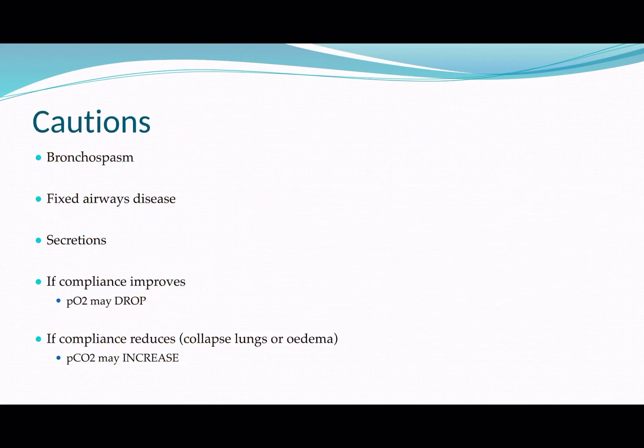There are a couple of cautions with APRV. First, bronchospasm: just because you've set a T-low at a certain amount doesn't mean it'll always be appropriate. If a patient starts to become wheezy or develops increased airways resistance, you may need to re-evaluate the T-low. Patients with fixed airways disease often need longer expiratory phases, so use the 50% to 60% rule for obstructive patients, and 75% for normal patients or ARDS.